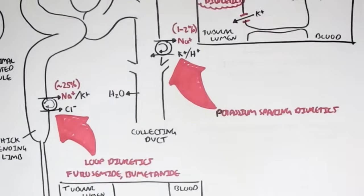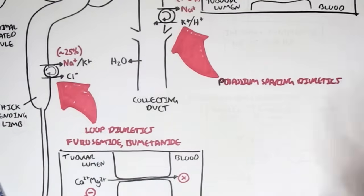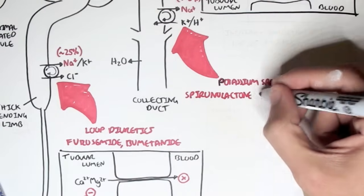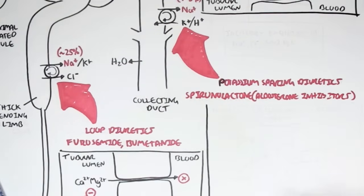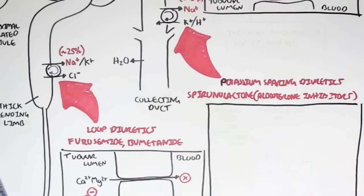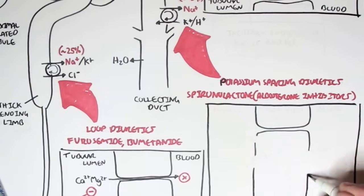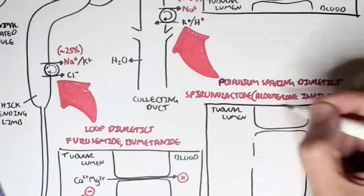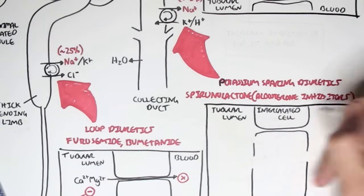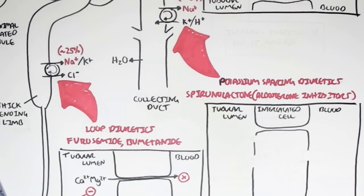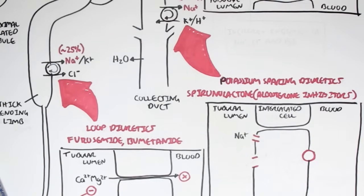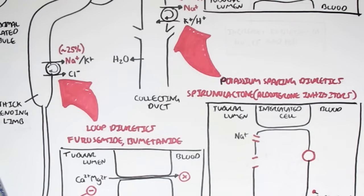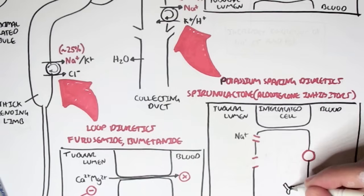The other type of potassium-sparing diuretics are aldosterone inhibitors, such as spironolactone, which work on the transporter within the collecting ducts — specifically the intercalated cells where this transporter is located. Normally, the hormone aldosterone, secreted by the cortex of the adrenal glands, enters the intercalated cells and binds to the aldosterone receptor. Because aldosterone is a steroid, it binds to the receptor inside the cell, which brings it into the nucleus.